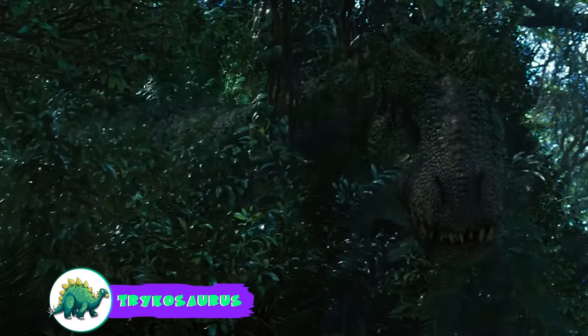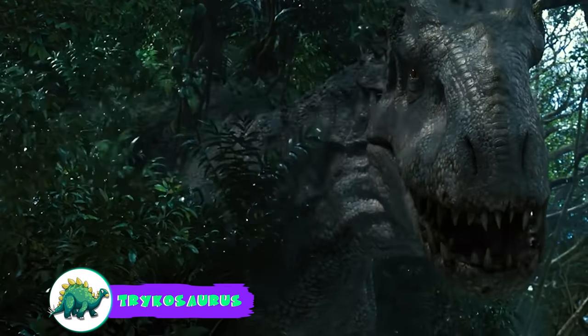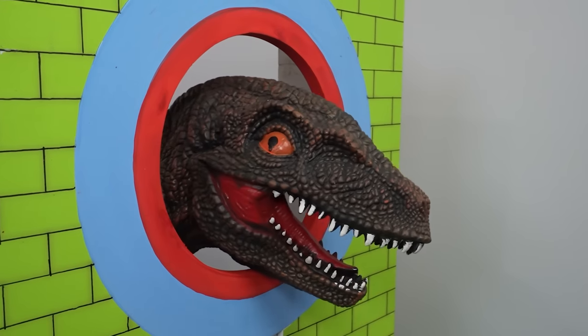Trichosaurus has the raw predatory power of the T-Rex and the defensive capabilities of the Ankylosaurus. Dino number five has come out.